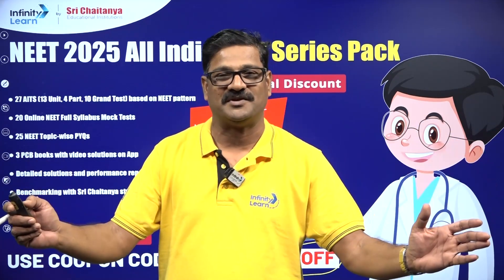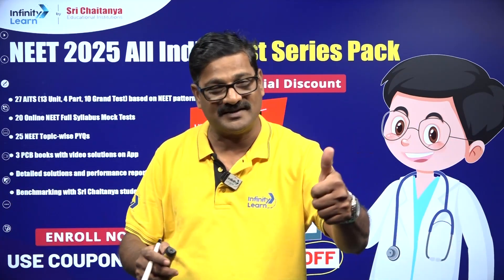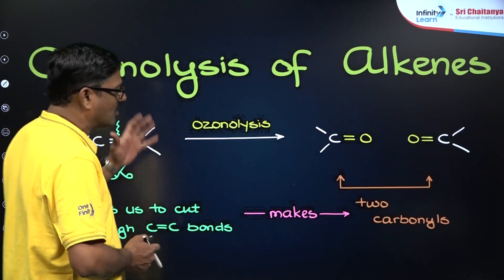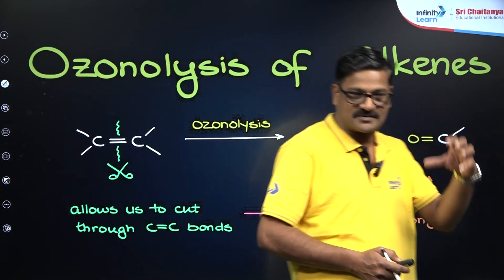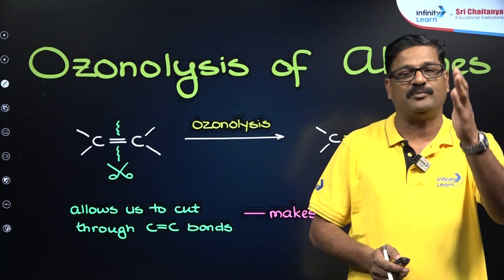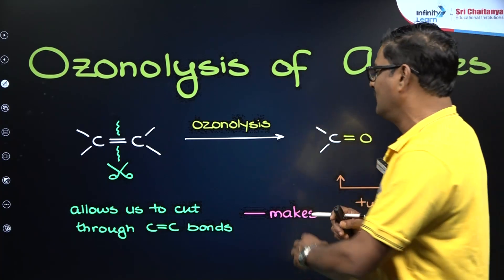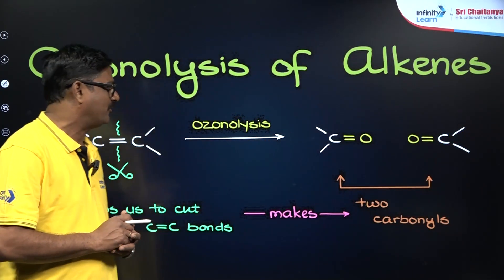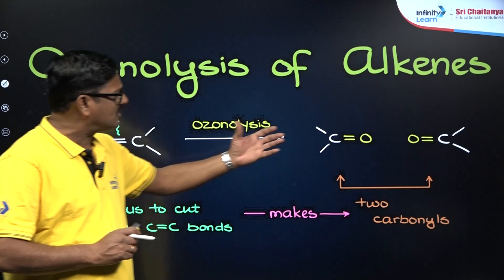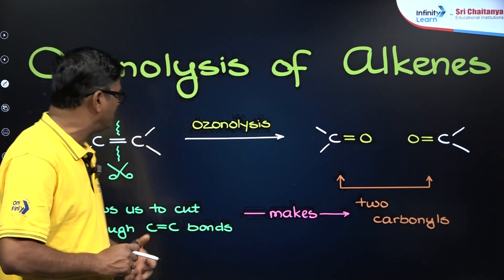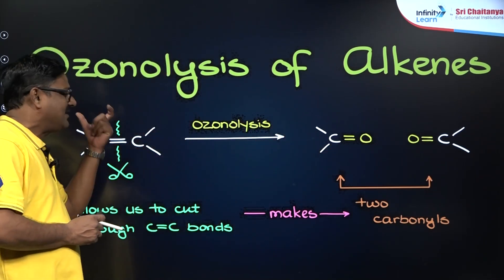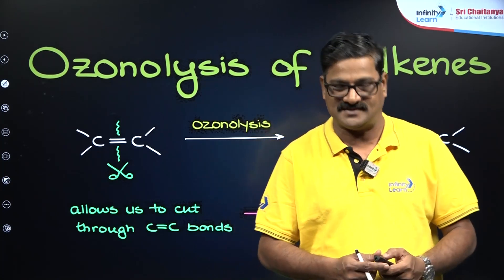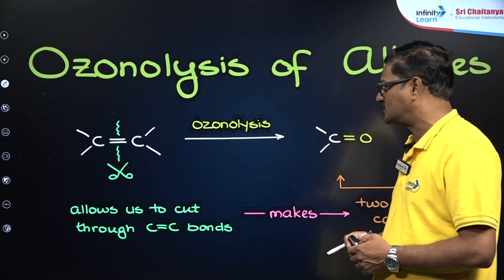Now let us go into the details of ozonolysis. By using ozone, we break the double bond and generate a carbonyl compound. Based on the resulting carbonyl compound, you can assess exactly where the carbon-to-carbon double bond is present — this is called ozonolysis.